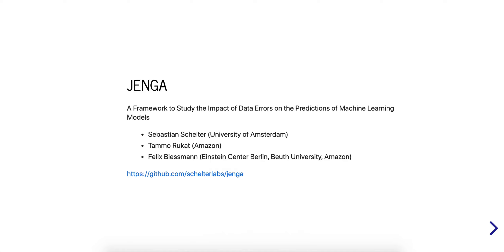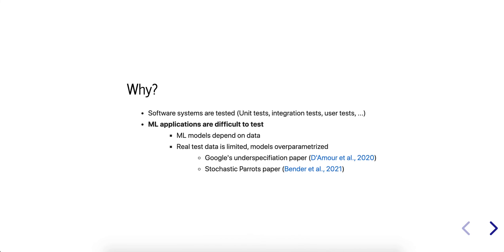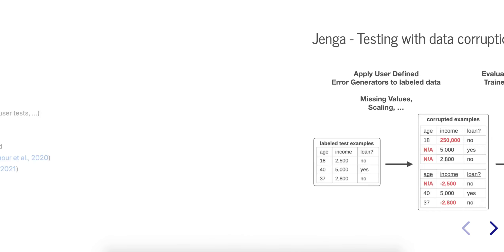Jenga is a framework to study the impact of data errors on your machine learning model. Why? Software systems are easy to test with unit tests, integration tests and so forth. Machine learning models are difficult to test because real test data is limited.